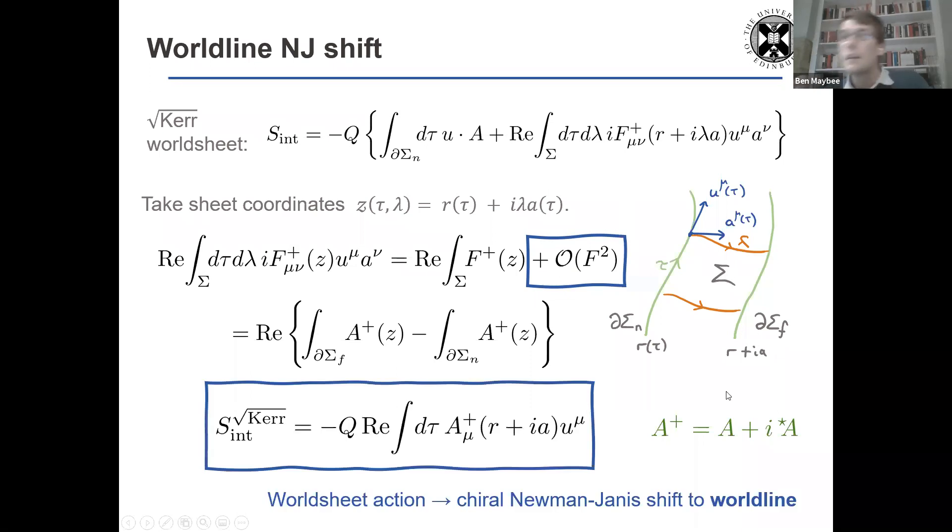And overall, we see that the interaction now, rather than the background field, the worldsheet action really has this Newman-Janis shift in the worldline.